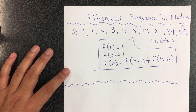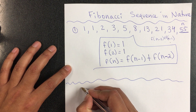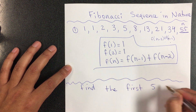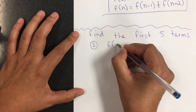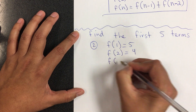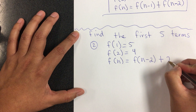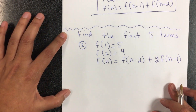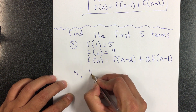Now, what if they give you the formula with two points and ask you to find the first five terms? They give you f of 1 equals 5, f of 2 equals 4, and f of n equals f of n minus 2 plus twice f of n minus 1. We already know the first two terms: the first one is 5 and the second one is 4.